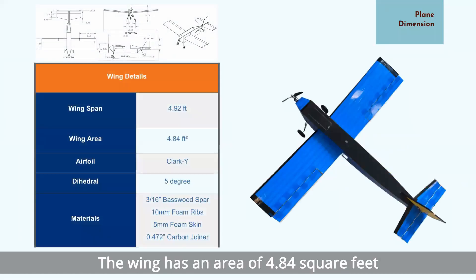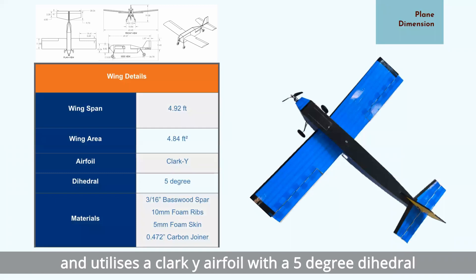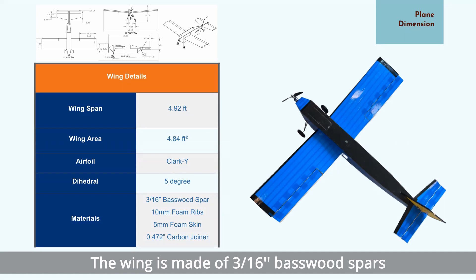The wing has an area of 4.84 square feet and utilizes a club-wide airfoil with a 5-degree dihedral. The wing is made of 3.16 inch balsa wood spars, 10mm foam ribs, 5mm foam skin, and a carbon tube joiner to attach it to the fuselage.